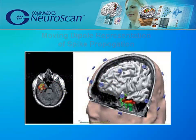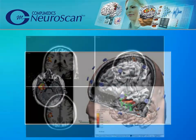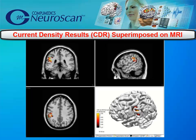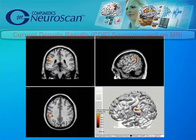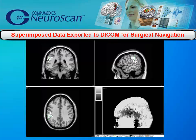Display capabilities in CURRY allow you to create final figures depicting selected results. In this example, a moving dipole representation of propagating spike activity is displayed in a cutaway view along with current density results. In another example, current density results are superimposed on the patient's MRI for precise localization of the activity. The source results can then be exported in DICOM and other formats for use with surgical navigation systems.